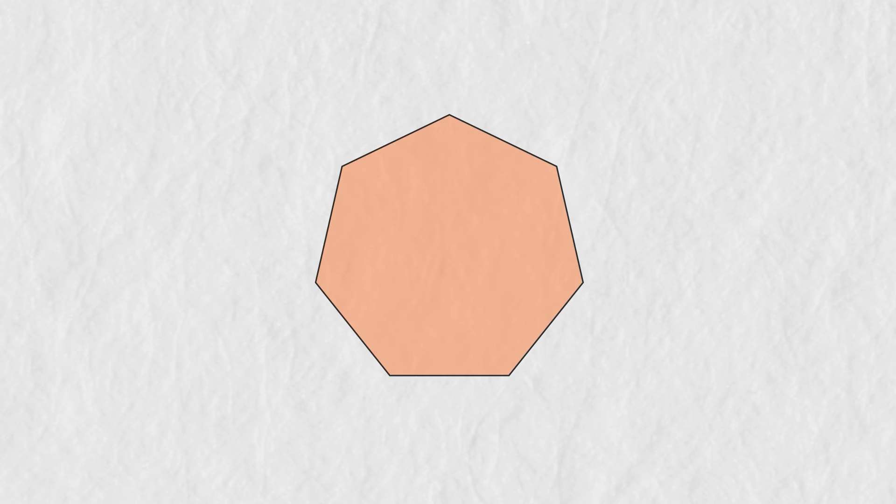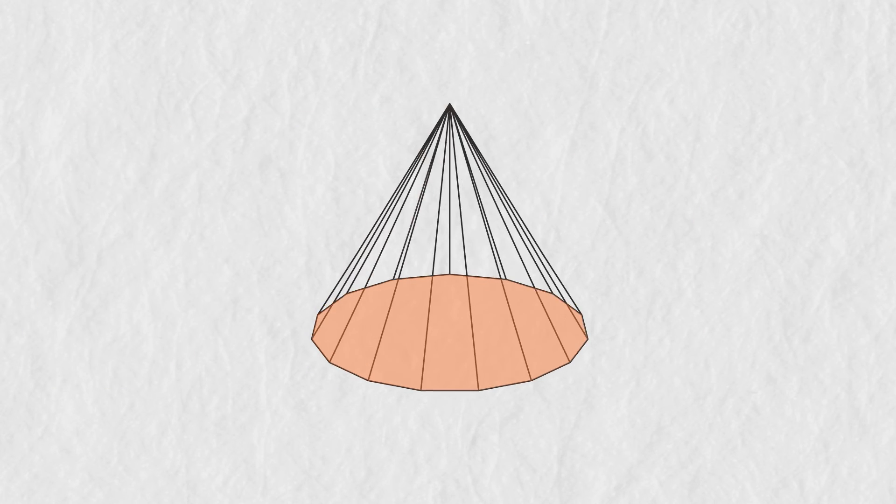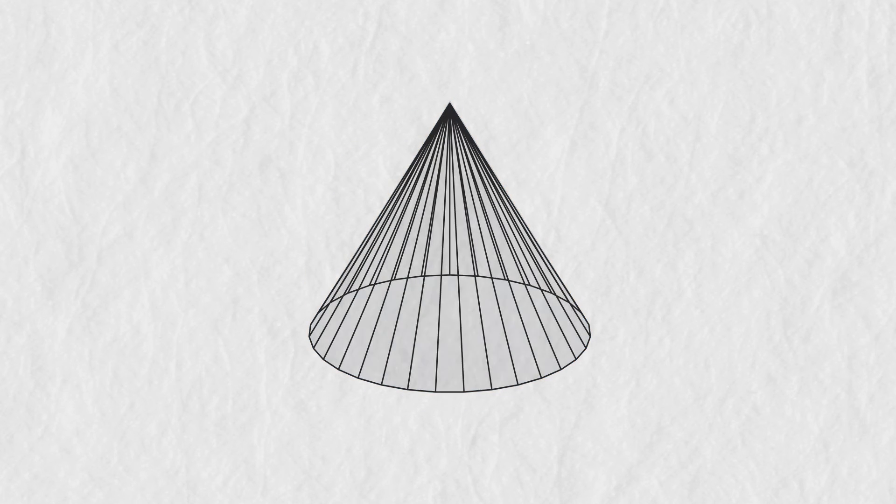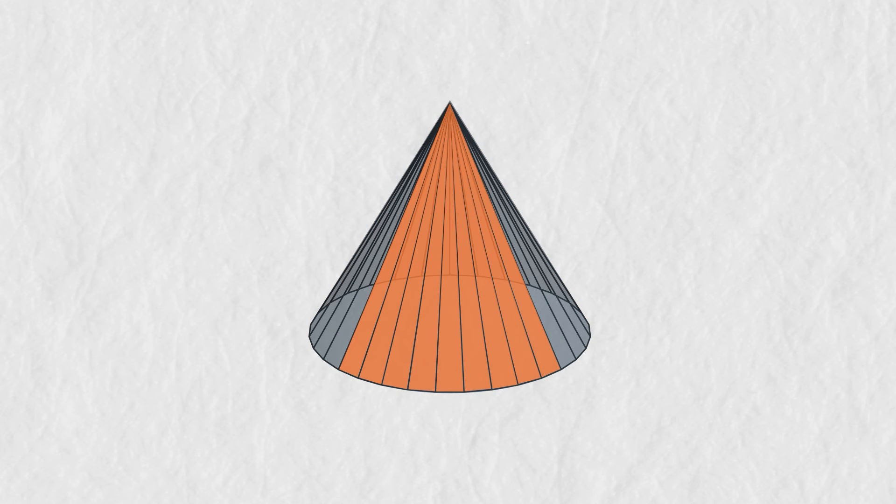If we keep increasing the number of sides of a regular polygon, it will eventually turn into a circle. Similarly, if we keep increasing the number of sides of the pyramid's base, the lateral surface will eventually turn into this curved surface and its base becomes a circle. So you can think of a cone as a pyramid with infinitely many triangular faces.